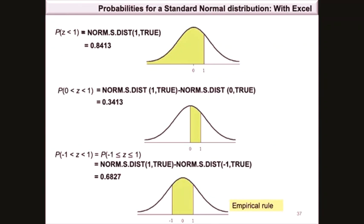This answer is approximately equal to the empirical rule, which states that approximately 68% of data lies within one standard deviation of the mean. Since we are working with z values from the standard normal distribution, the mean is 0 and the standard deviation is 1, so the probability of lying within one standard deviation is P(−1 < z < 1), consistent with the empirical rule.